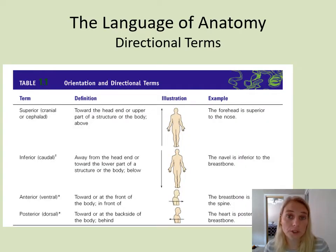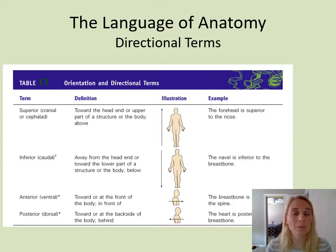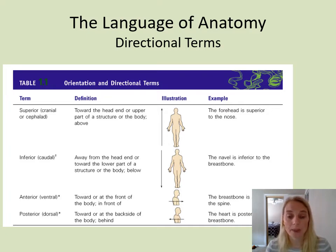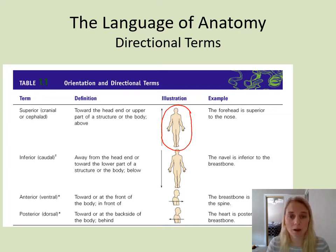The first group of words you need to be comfortable with is directional terms. Now that you are in anatomy and physiology, you have to understand how different parts of the body — the anatomy specifically — are related to each other. First of all, we have to define what's called anatomical position. This little person here is standing in what's called anatomical position.